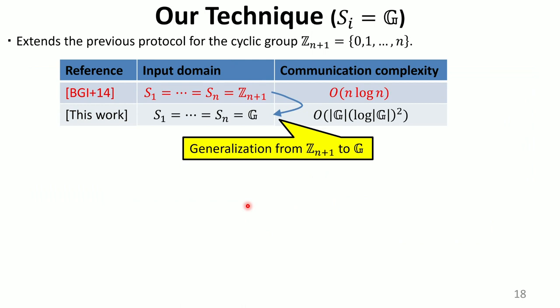Now we explain our NIMC protocols. First, we deal with the case where input domains are all G. Our high-level idea is extending a previous protocol tailored to the cyclic group into a general abelian group, so the communication complexity of our protocol is similar to that of the previous protocol.